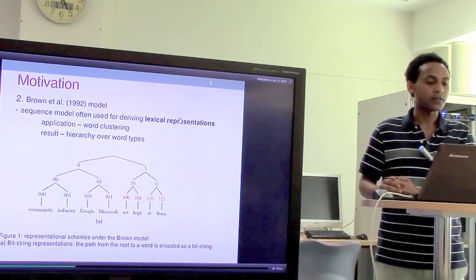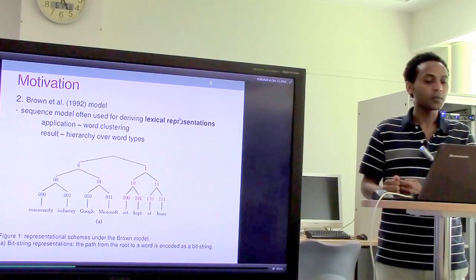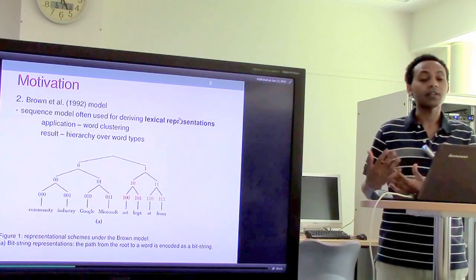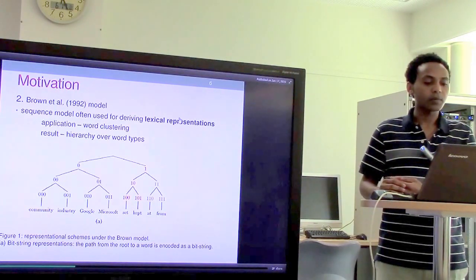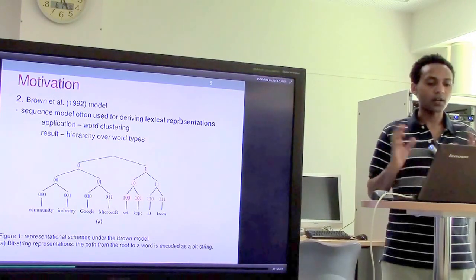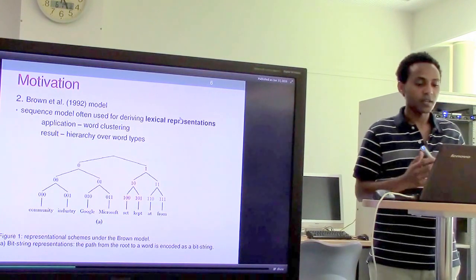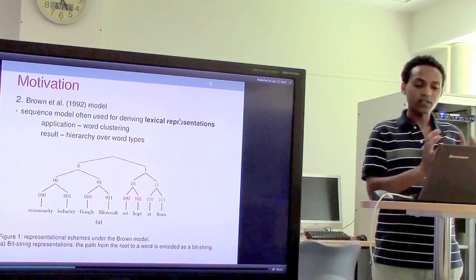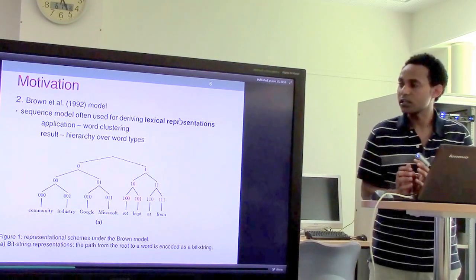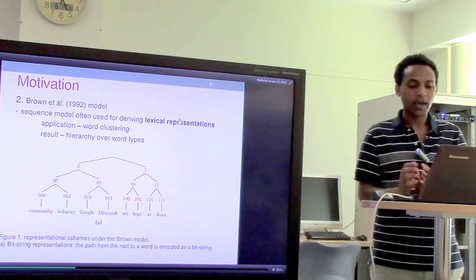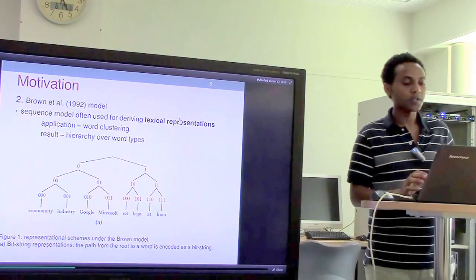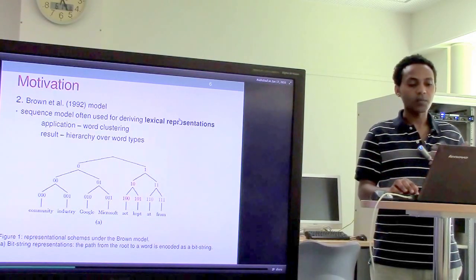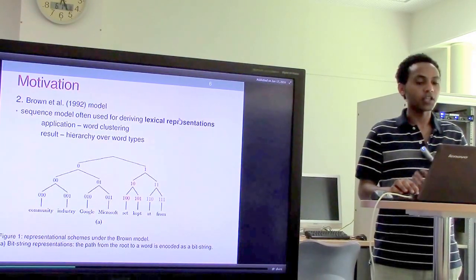The second motivation is the Brown et al. model, which tries to derive word or lexical representations. The application of this model was to cluster words according to their types. As we can see, this is a binary representation of words, and words which have some kind of semantic relationship are grouped together — for example, community and industry, Google and Microsoft, set and kept, at and from. In addition to semantic relationships, the authors also identified hidden relationships with regard to part of speech tagging using this lexical representation.